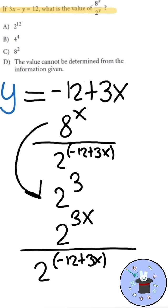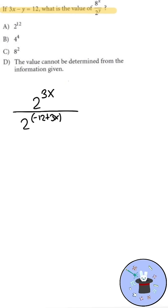We are then dividing that by 2 raised to negative 12 plus 3x. When you're dividing power expressions of the same base, you subtract the exponents but keep the base. We get 2 raised to 3x minus negative 12 plus 3x.